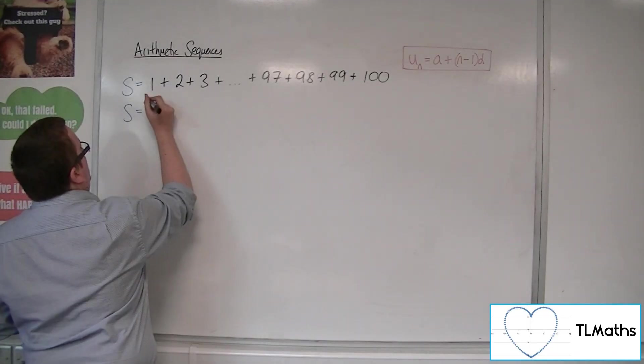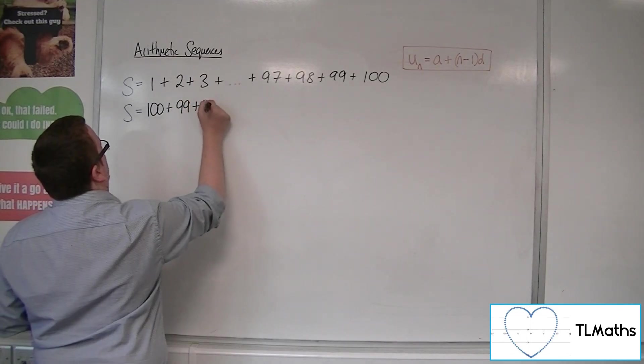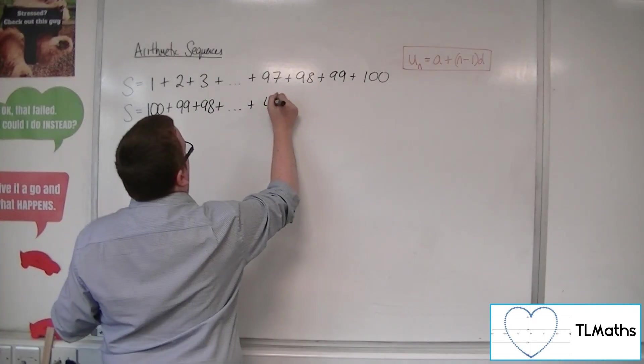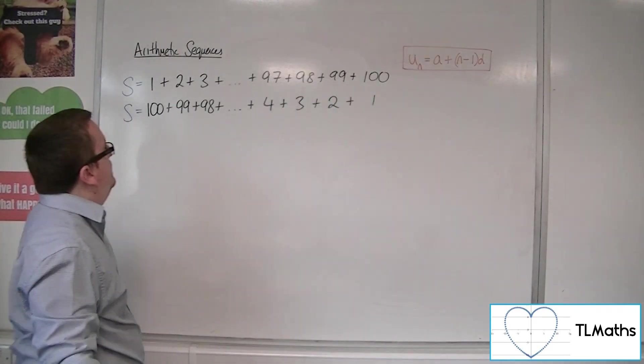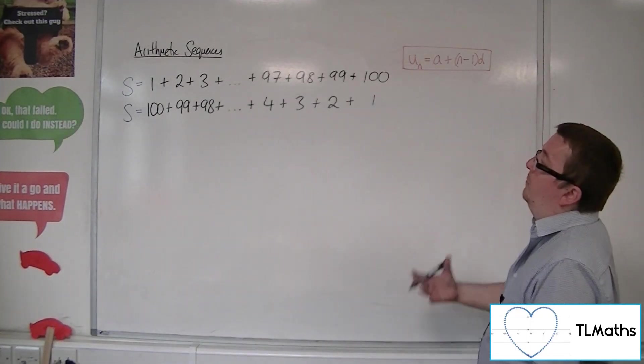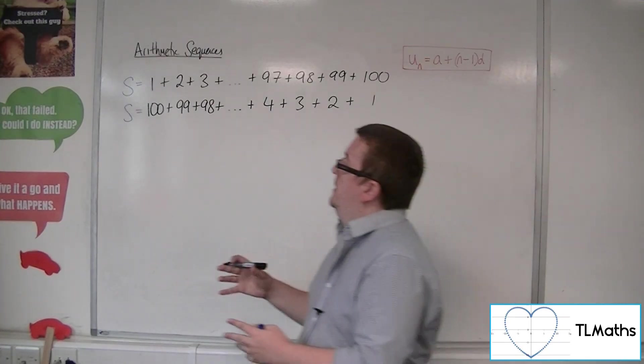So I've got actually 100 + 99 + 98 + etcetera + 4 + 3 + 2 + 1. So actually what I have here are the same sequence, but one under the other, but one with the numbers reversed.